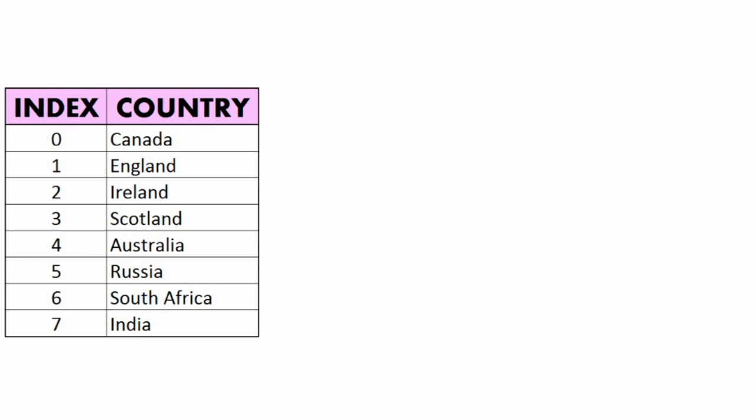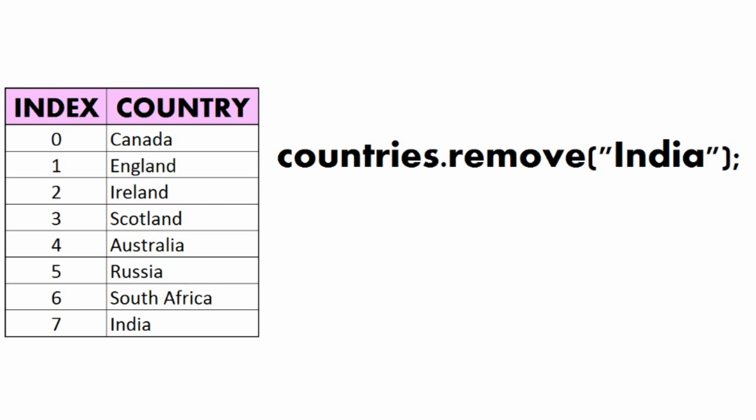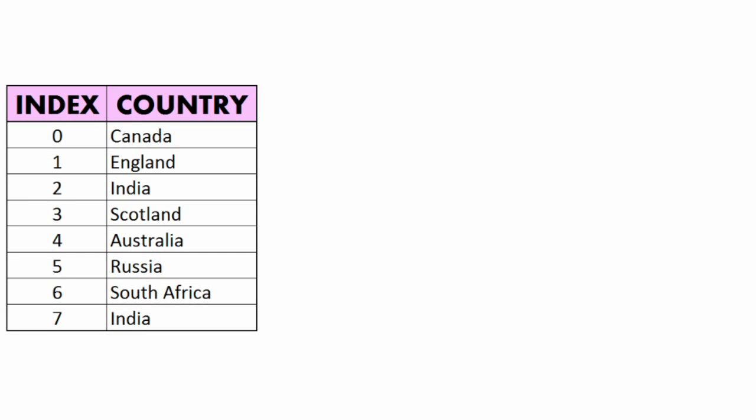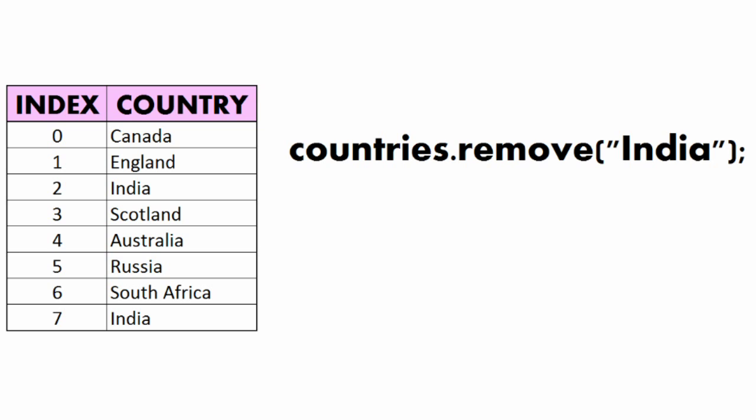To remove India, we can type countries.remove("India"), which works no matter what index it's at. If we add two copies of India on our list and run countries.remove("India"), only the first copy in the list would be removed.